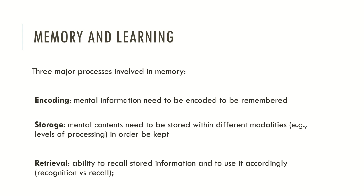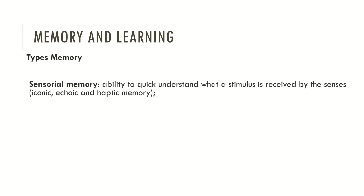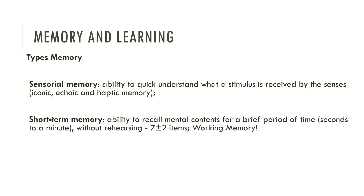There are different types of memory. Sensorial memory, which is the ability to quickly understand what the stimuli received by the senses is. Typically, we can describe this as iconic, echoic and hectic memory. In the future, I will produce different videos focused specifically on these kinds of memory. Short-term memory is the ability to recall mental contents for a brief period of time, within seconds to a minute and without rehearsing.